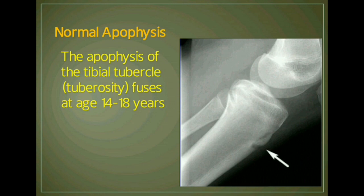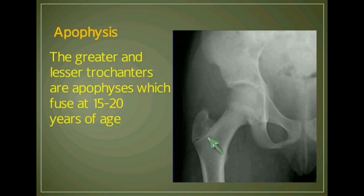The growth plate in a young patient with an unfused skeleton can mimic a fracture. A normal apophysis of the tibial tuberosity fuses between the ages of 14 and 18 years. Another example: the greater and lesser trochanters are apophyses which fuse between 15 and 20 years old.